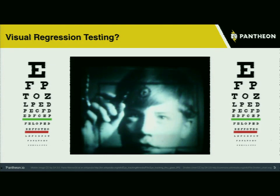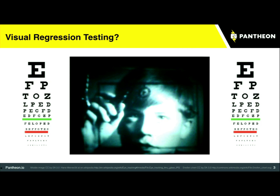Visual regression testing is basically the act of taking two screenshots — a before screenshot and an after screenshot — and running them through an image comparison tool. A common tool is ImageMagick's Compare, a command line utility and open source program. It will go pixel by pixel, compare the images, and generate a composite image that will tell you if something has gone wrong.